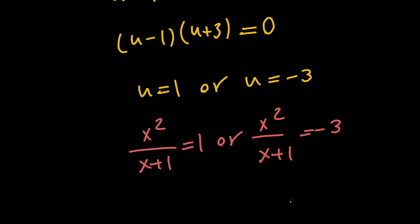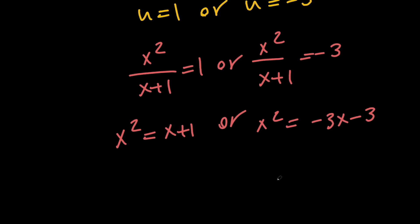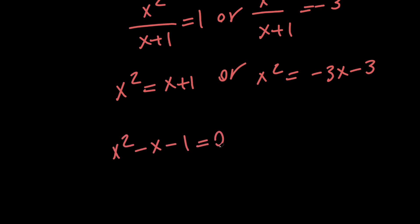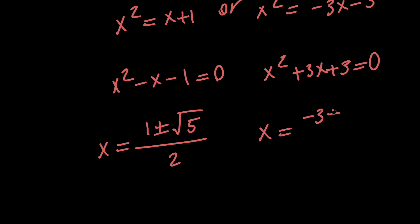Since u equals x squared over x plus 1, that means x squared over x plus 1 either equals 1 or equals negative 3. Cross-multiplying gives us x squared equals x plus 1, or x squared equals negative 3x minus 3. From these two we get two quadratic equations: x squared minus x minus 1 equals 0, and x squared plus 3x plus 3 equals 0. Using the quadratic formula, the first gives x equals 1 plus or minus the square root of 5, all divided by 2. The second gives x equals negative 3 plus or minus the square root of 3 times i, divided by 2, which means we have complex solutions in the second one.